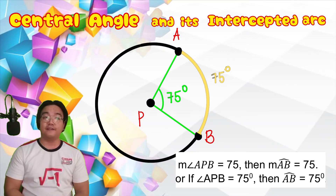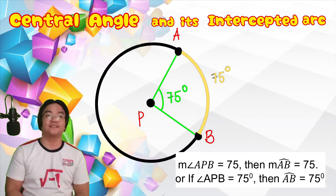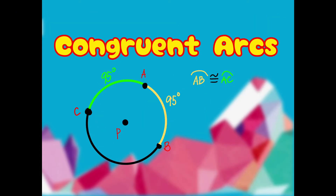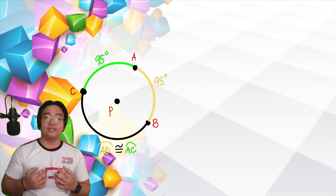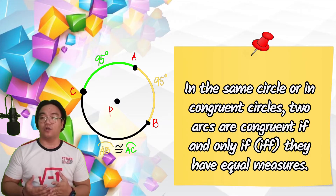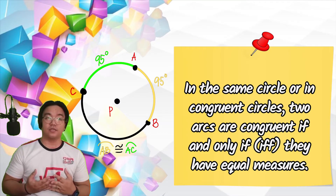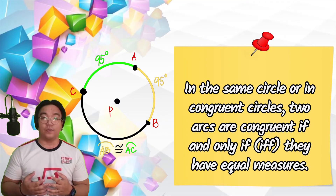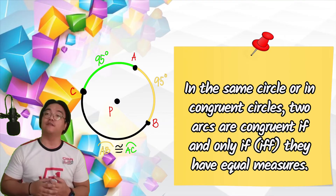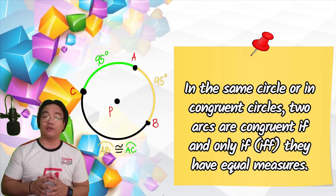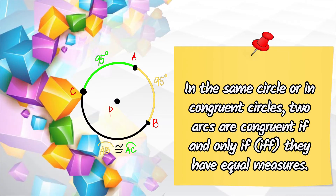Definition of congruent arc: in the same circle or in congruent circles, two arcs are congruent if and only if they have equal measures.